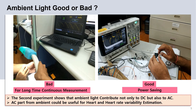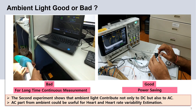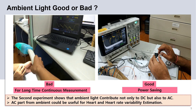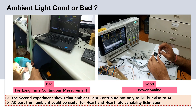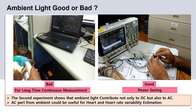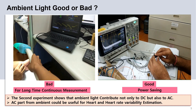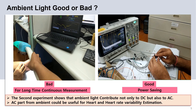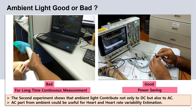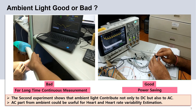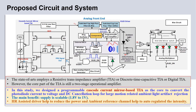Ambient light — good or bad? In the first video, you will see the change in ambient light causes huge dissipation. In the second video, there is no light source from the LED and the ambient light not only contributes to DC and noise but also to the AC part. By considering this, we propose an adaptive readout circuit and system in this study to reduce the power consumption of the PPG readout circuit.